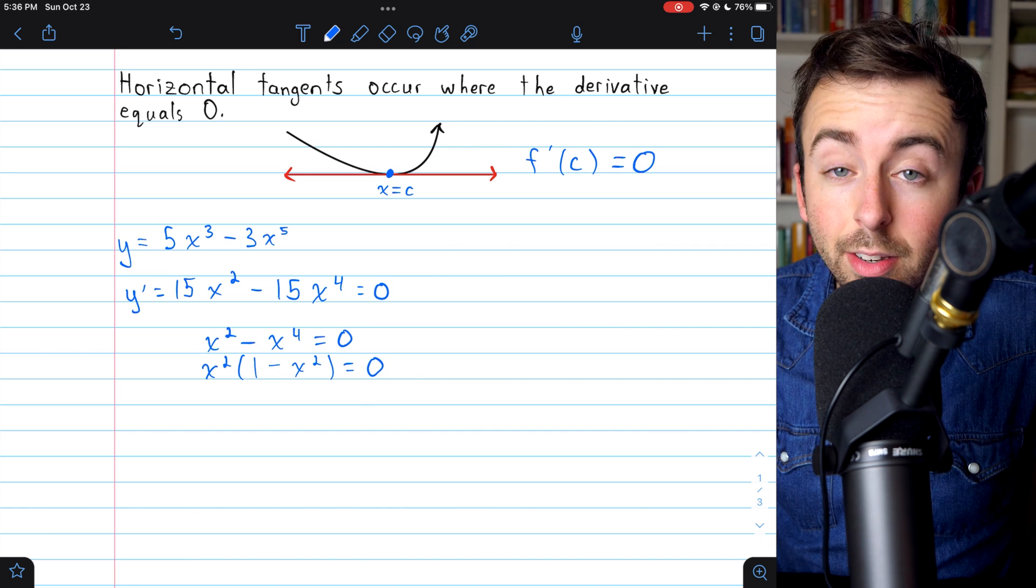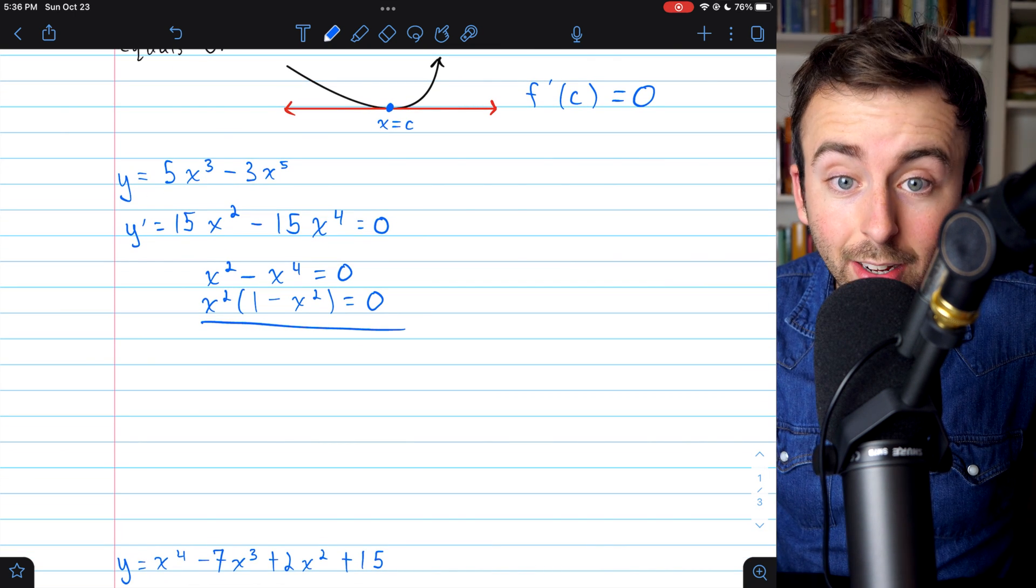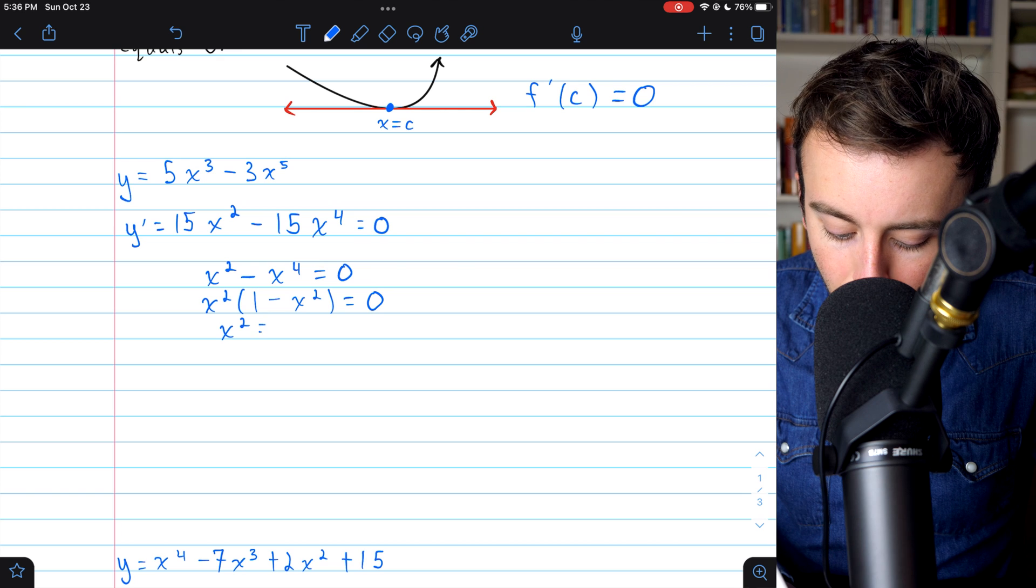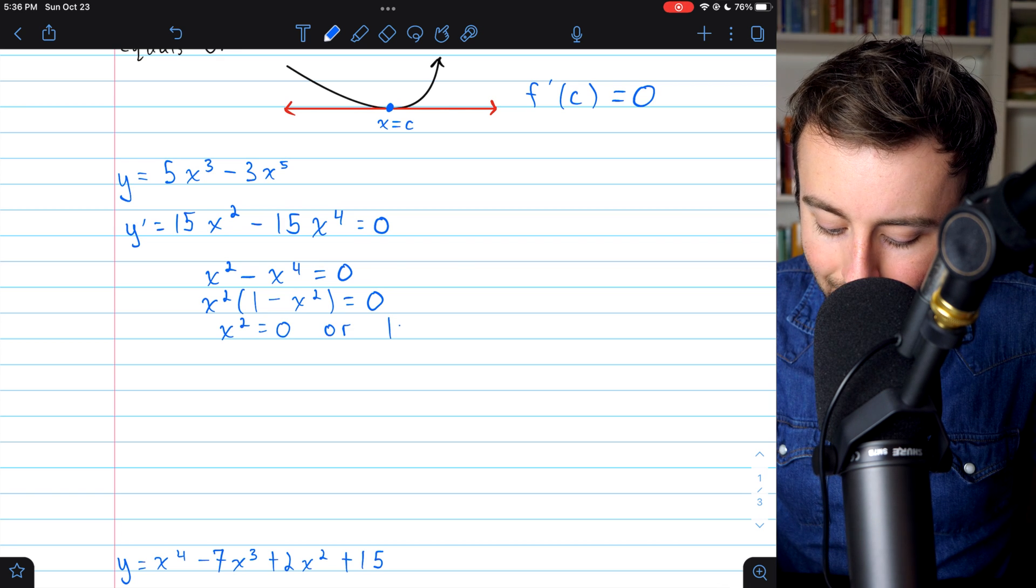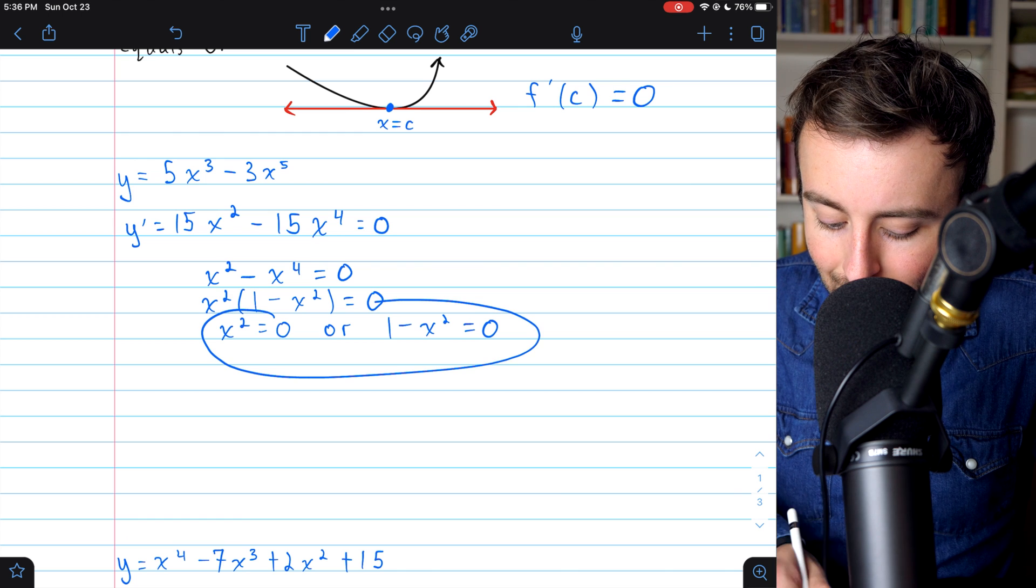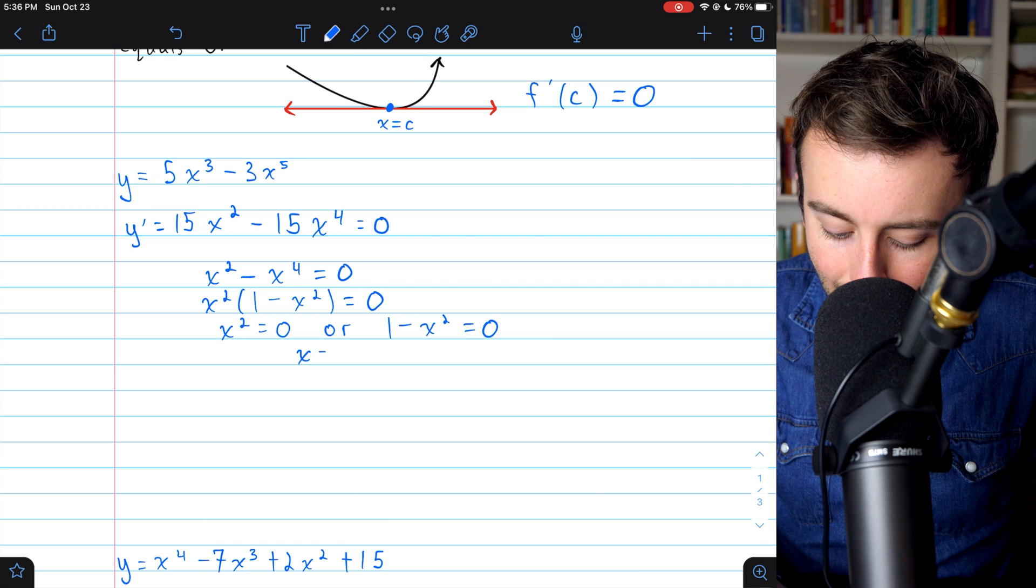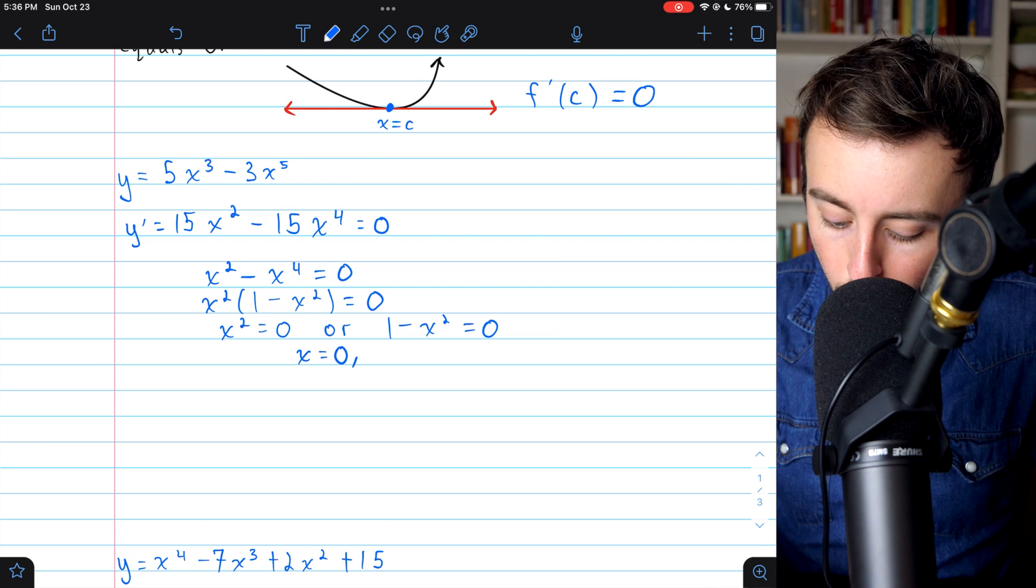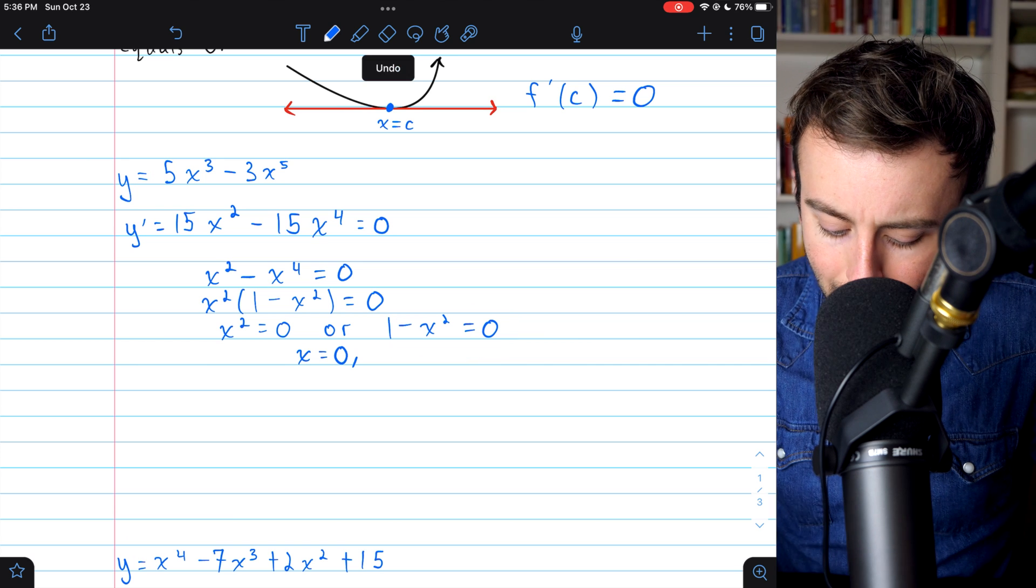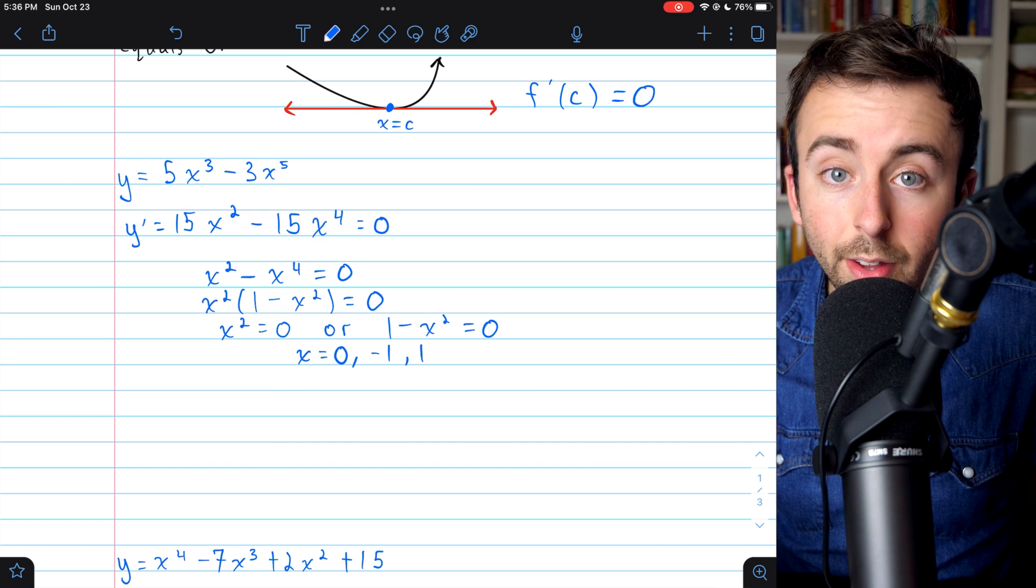Now we can start to find some places where we have horizontal tangents. If x squared times 1 minus x squared equals 0, then by the zero product law, we know that either x squared equals 0, or 1 minus x squared equals 0, or of course, both could be true. Now what values of x could possibly satisfy these equations? Well, for x squared to equal 0, we would need to have that x equals 0. For 1 minus x squared to equal 0, we would need x squared to be 1, which would mean that x could be negative 1, since negative 1 squared is 1, or it could be positive 1.